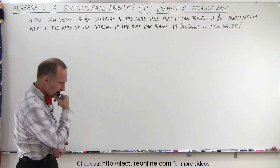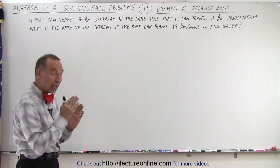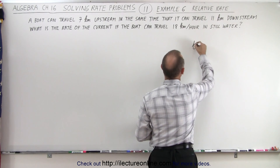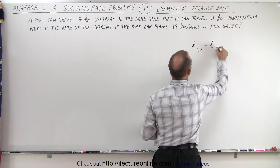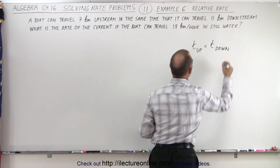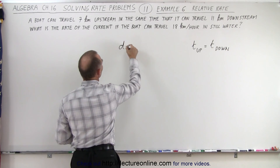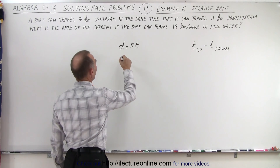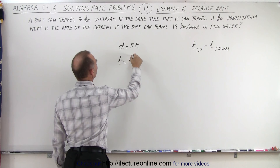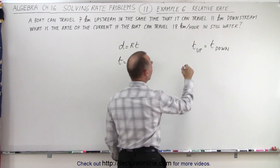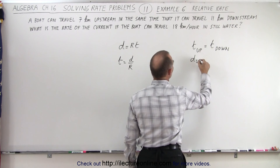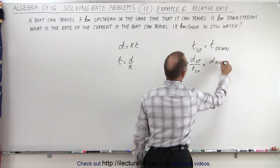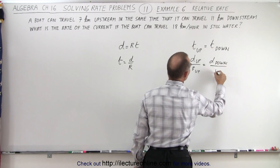The time is the same going upstream as downstream, so let's write that as an equation: time upstream equals time downstream. We have the equation distance equals rate times time, so solving for time gives us time equals distance divided by rate. That means distance upstream divided by rate upstream equals distance downstream divided by rate downstream.